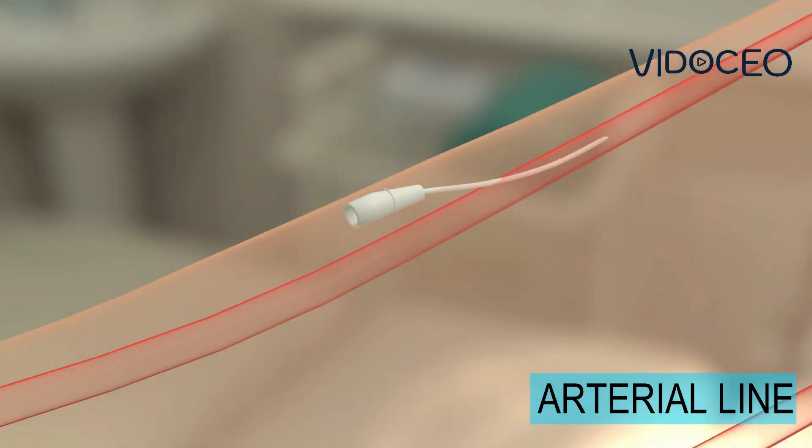When the catheter can be removed, it slides out easily and the doctor will hold pressure on the area for a few minutes to prevent the artery from bleeding.